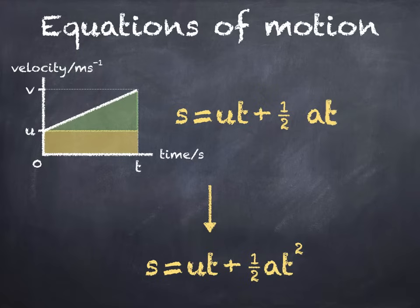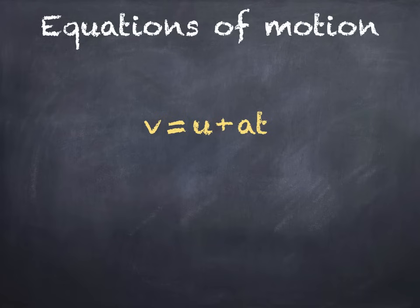For the third derivation, we start with the first equation and end with v squared equals u squared plus 2as. We start by squaring both sides, which gives us this.